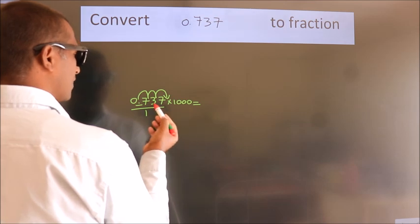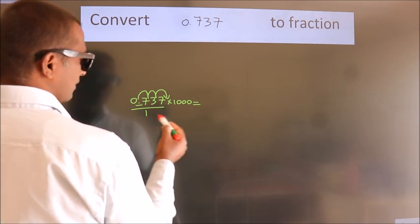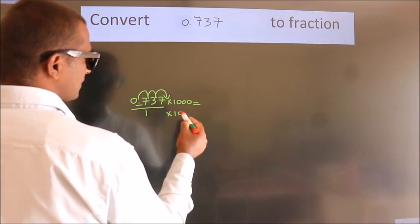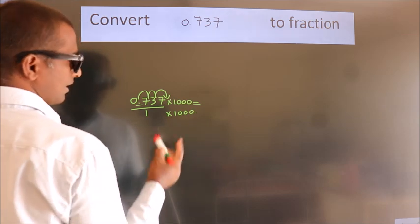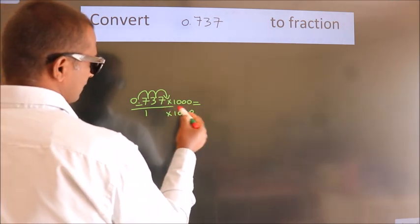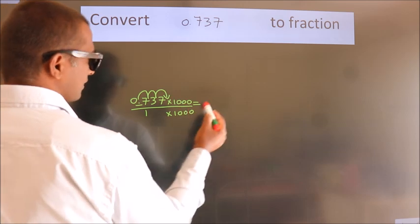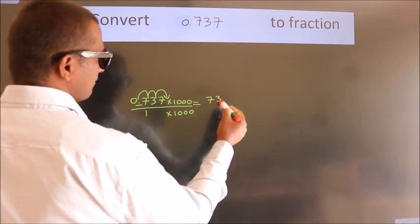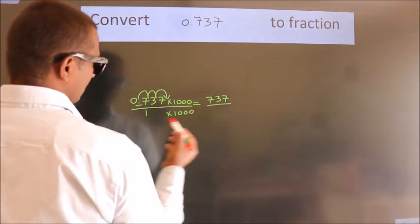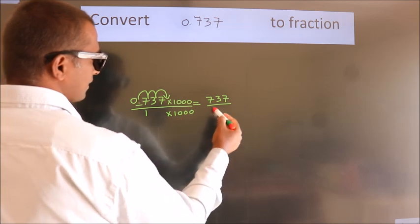Whatever number you are multiplying in the numerator, in the denominator also do the same. So, 0.737 × 1000 equals 737, and 1 × 1000 equals 1000.